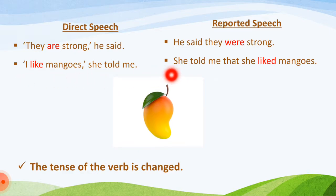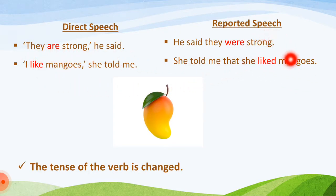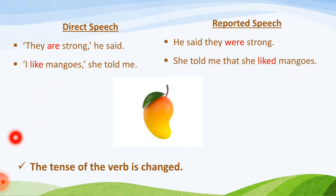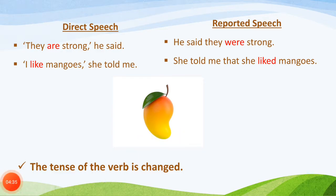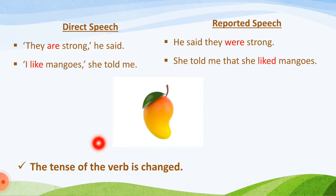'I like mangoes,' she told me. In reported speech this becomes: she told me that she liked mangoes. Again, the tense of the verb has been changed — 'like' is present tense and 'liked' is past tense. So the rule is: whenever we change direct speech into reported speech, the tense of the verb is changed. This is the first rule.